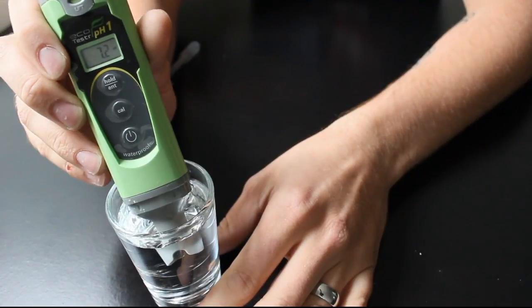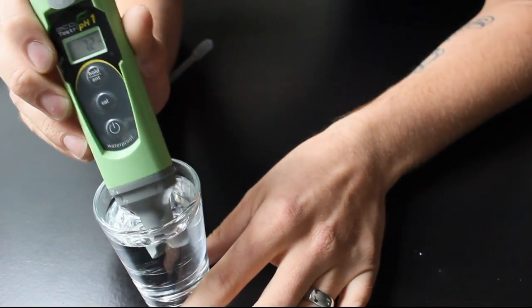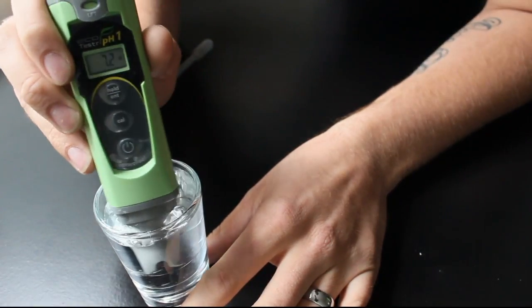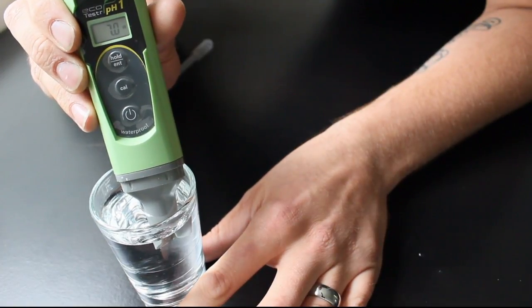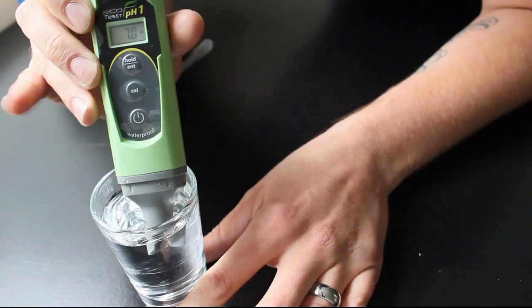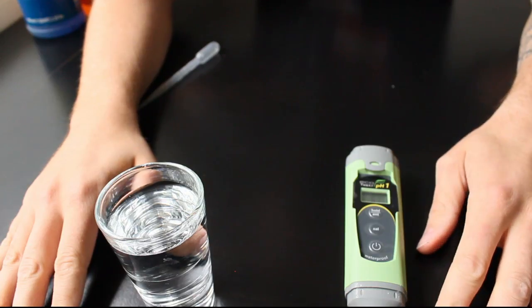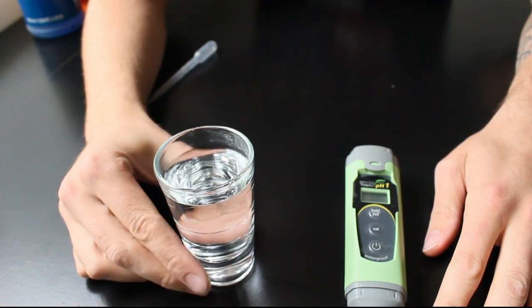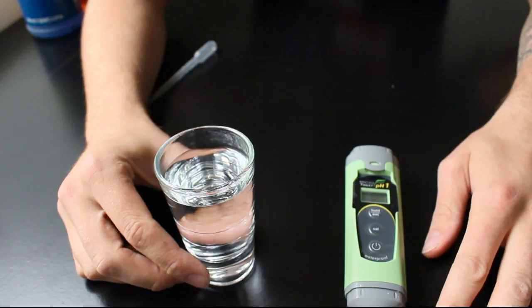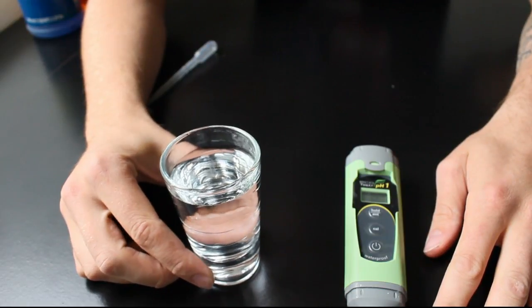We're dipping our pH pen in the solution, and you give it a minute. You can swirl it. Give it a minute here and we'll see what it's at. It usually only takes about a second, and here we are with a 7.0 pH. The cannabis plant prefers a pH environment of 5.5 to 6.5. So our tap water being 7.0 pH, we need to actually drop that. So let's demonstrate that.